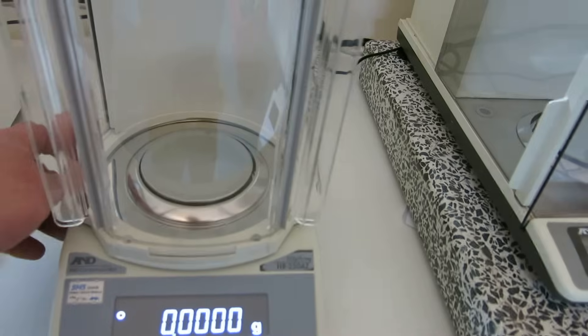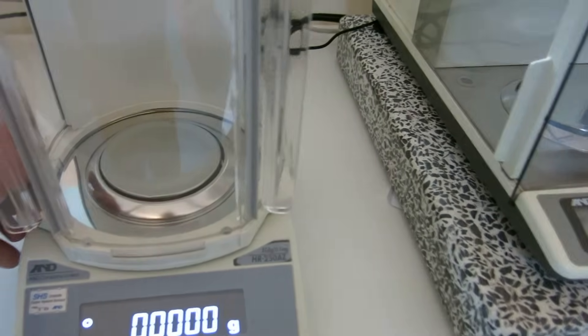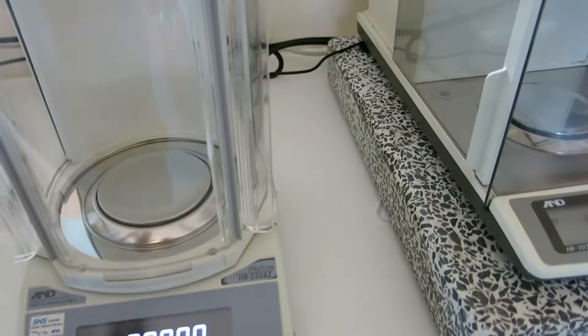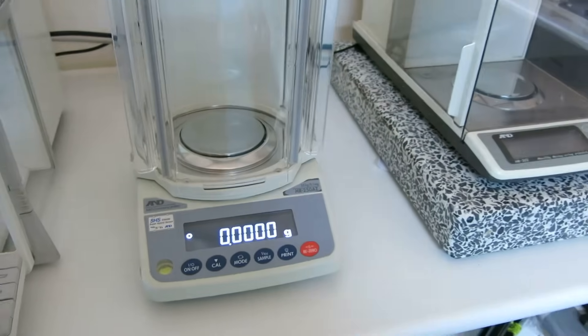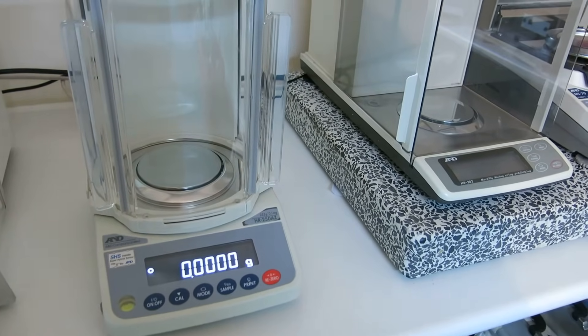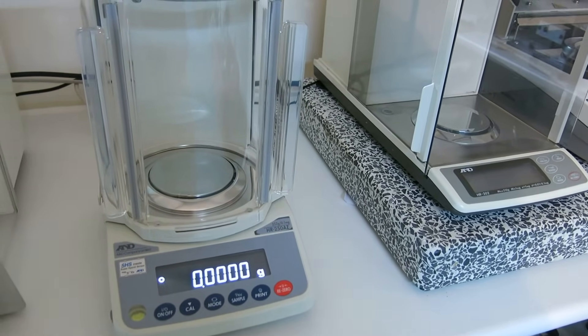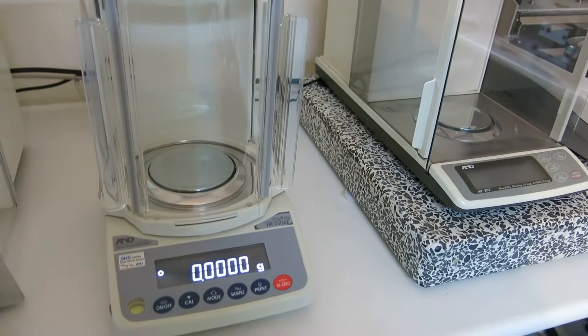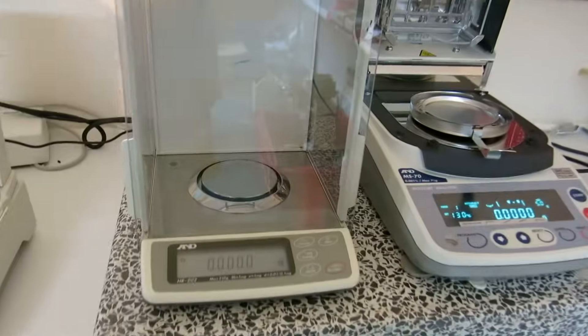The draft shield comes off as well for ease of cleaning, with two simple clips on the side here. For more detail have a look on our website. But really good 250g internal calibration balance. I've sold a lot of these. And they're very popular for good reason. An excellent balance at a good price.